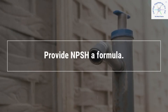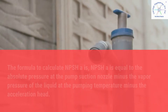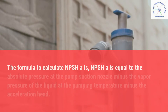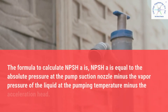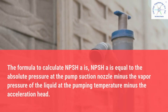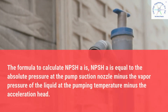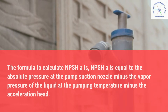Provide the NPSHA formula. The formula to calculate NPSHA is: NPSHA equals the absolute pressure at the pump suction nozzle minus the vapor pressure of the liquid at the pumping temperature minus the acceleration head.